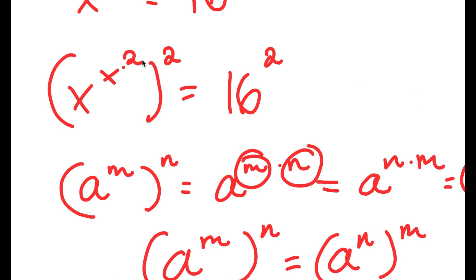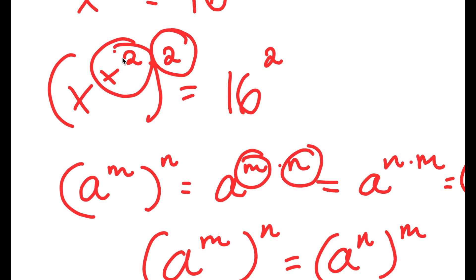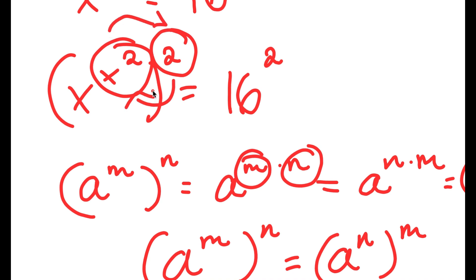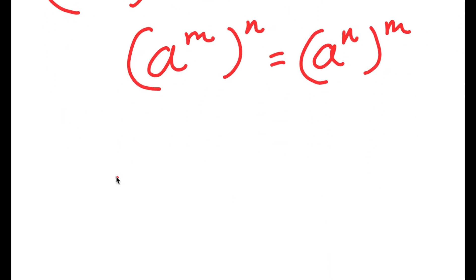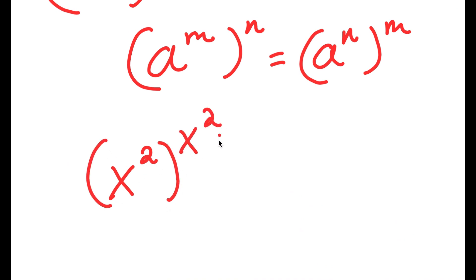So in this case, I have x to the power of x to the power of 2, to the power of 2. We can go ahead and switch the places of x to the power of 2 and 2. So I get x to the power of 2, to the power of x to the power of 2, is equal to 16 to the power of 2.